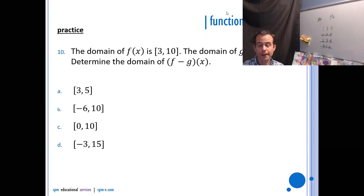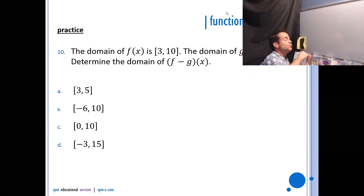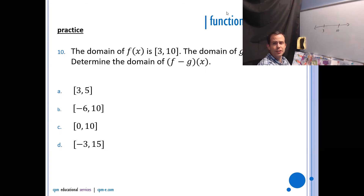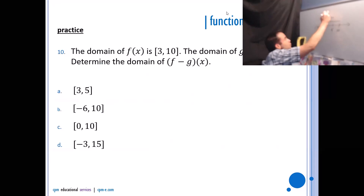The domain of f(x) is [3, 10] and the domain of g(x) is [−6, 5]. Determine the domain of (f − g)(x). For the new function's domain to exist, both original functions must simultaneously exist — so you take the intersection. The domain of f is 3 to 10, g is −6 to 5, and the overlap is 3 to 5.